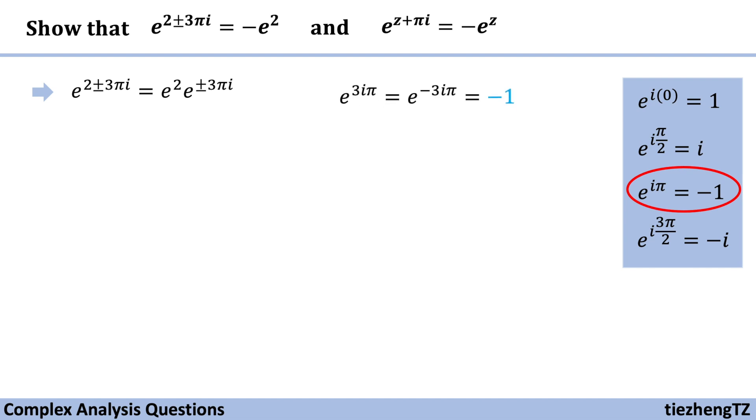So of course, e to the power of 3 pi i or e to the power of minus 3 pi i, they are both equal to minus 1.